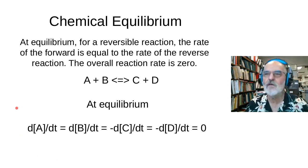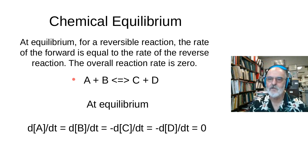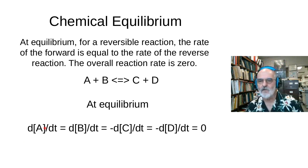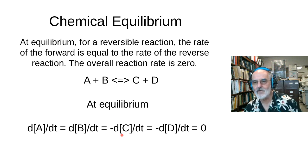Let's start with chemical equilibrium. At equilibrium for a reversible reaction, the rate of the forward reaction equals the rate of the reverse reaction. If you write the overall reaction A plus B going to C plus D, at equilibrium the loss of A per unit time equals the loss of B per unit time because the stoichiometry is one to one. So every time you lose an A, you must lose a B, and the products are formed at the opposite rate.